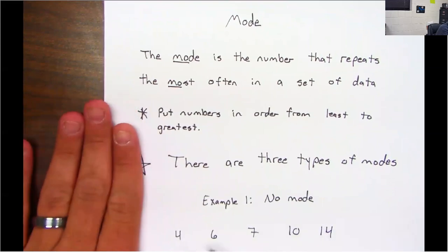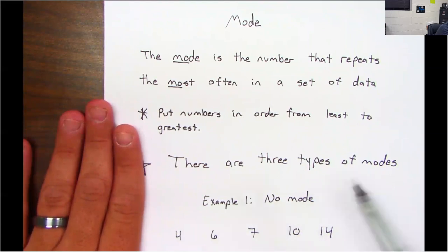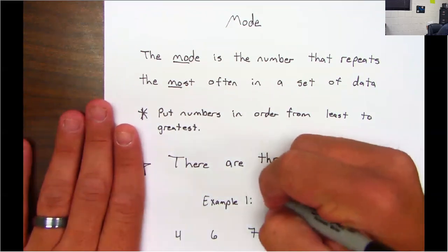If you notice, we already have the numbers in order from least to greatest. Do any of these numbers repeat in this data set? No — no numbers repeat, hence no mode.